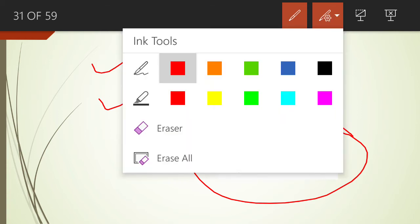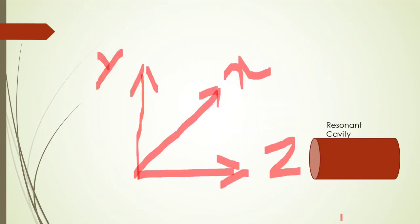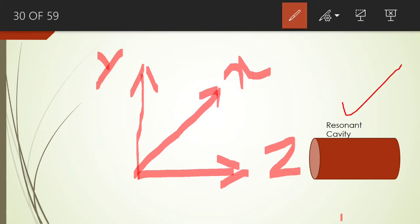Let us consider another important diagram. In this diagram you can see the resonant cavity in the form of a cylinder. Here is the X-axis, and this X-axis is tangential to the cross-sectional area of the cylinder — in other words, it is tangential to the interface between the cylinder and the mirrors.